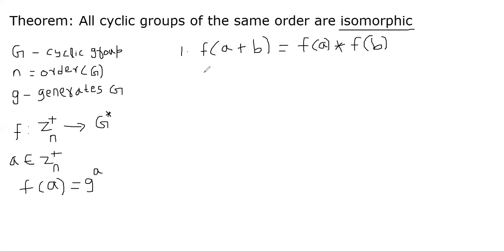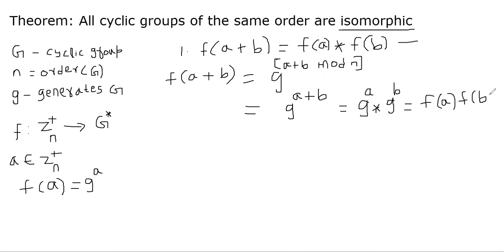I also need to show f is a one-to-one function. Let's prove the homomorphism first. We take f(a + b) and apply the function we defined. When we add a and b, we may get out of n, so we need to do mod n. This is because Z_n is from 0 to n minus 1 only. We will make use of another theorem we learned earlier: g power (a + b mod n) is the same as g power (a + b), because the order of g is n since g generates the group G. This is nothing but g power a times g power b, which is f(a) star f(b). So the function f is homomorphic at this point.